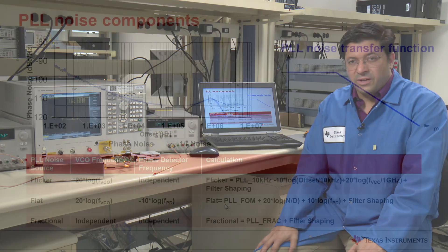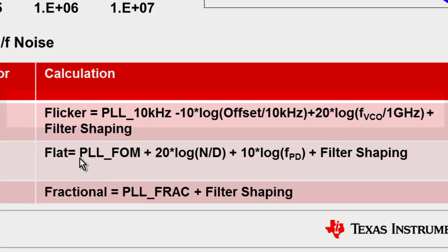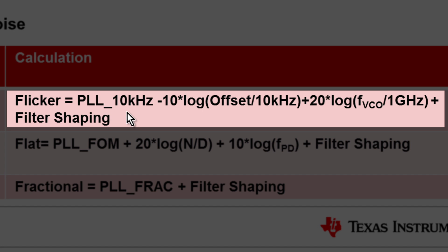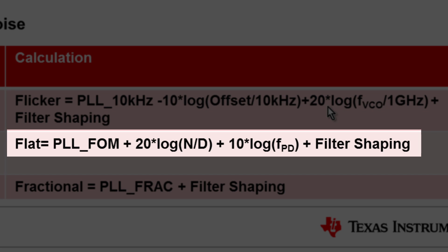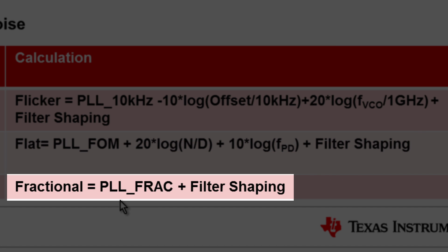The PLL noise actually has two critical noise components. We have a figure of merit and a flicker noise. The flicker noise can be thought of as a noise acting at 10 kilohertz offset. It changes at 10 dB per decade and changes as 20 log of VCO frequency, and of course it's affected by the loop filter shaping. The flat noise can be characterized as a figure of merit plus 20 log of N over D, plus 10 log of phase detector, and then this is also shaped by loop filter. And if you turn on the fractional modulator, it can add its own noise, which is independent of these other two sources.